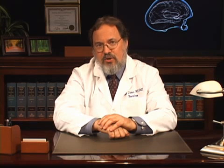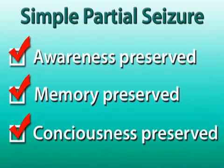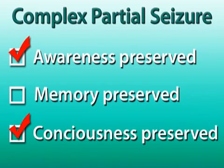This type of seizure is called a complex partial seizure. It is the most common type of seizure in adults. In general, when awareness, memory, and consciousness are preserved during the seizure, then a seizure is called simple partial. However, if any are impaired, then the seizure is called complex partial.